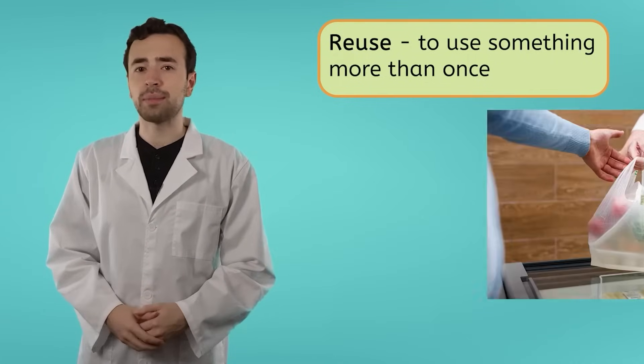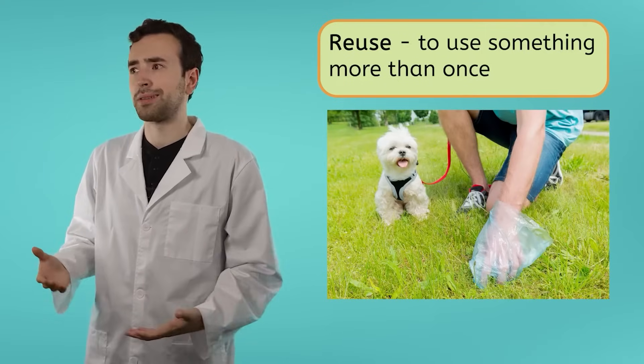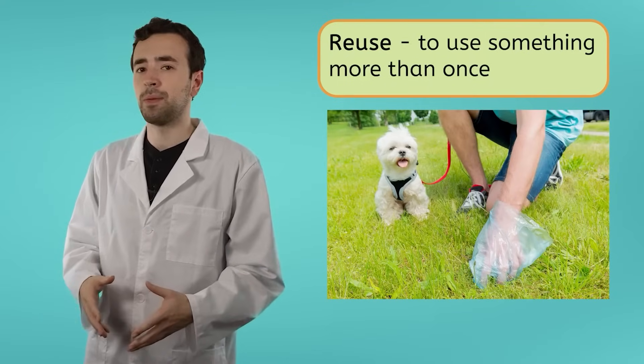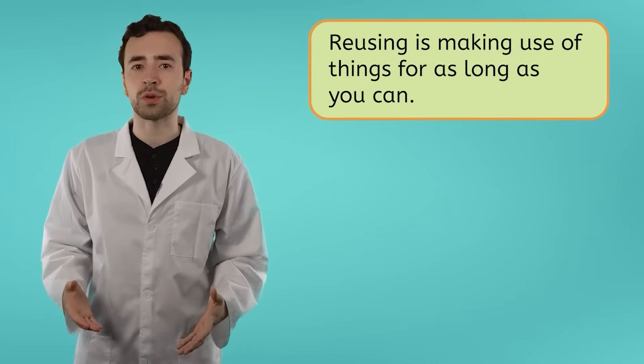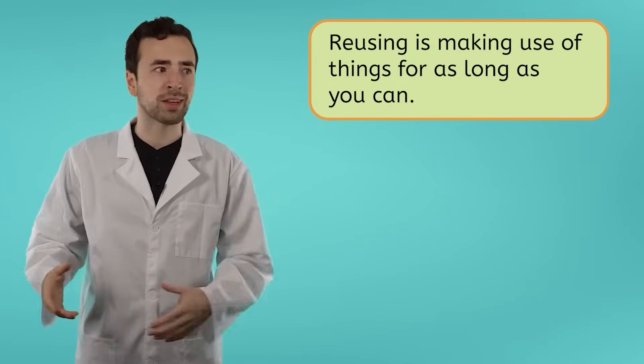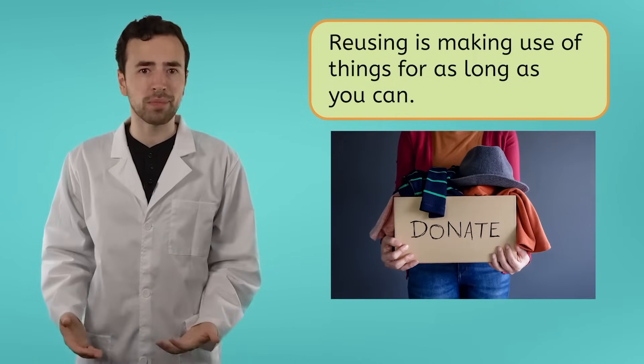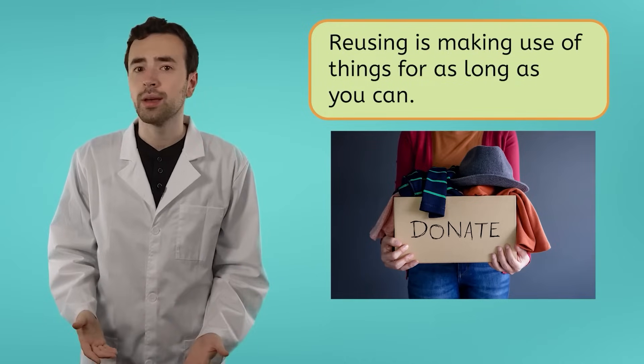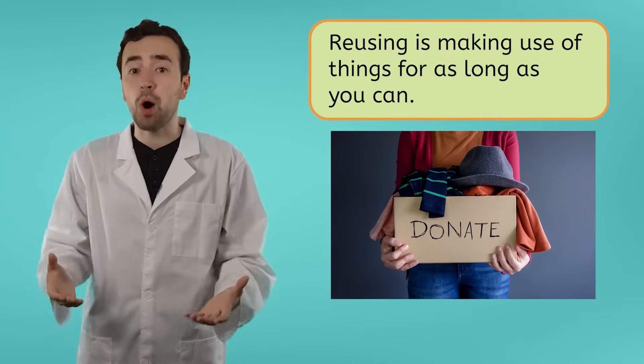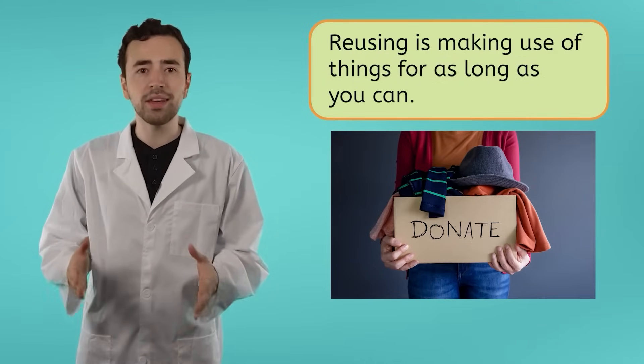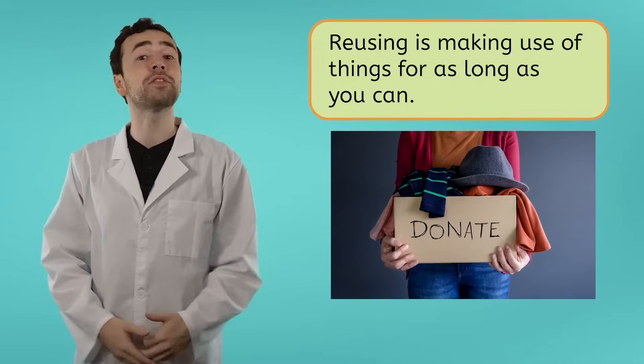In the case of that plastic bag, that means using it the next time you go out shopping or for something else, like picking up your dog's waste. Reusing can also look like making use of things for as long as possible instead of throwing them away. For example, if a shirt doesn't fit anymore, it can be given to a friend or donated to charity. Or the reverse. Instead of buying something brand new, it can be bought used or second hand. Anything that prevents the item from ending up in a landfill is beneficial to the planet.